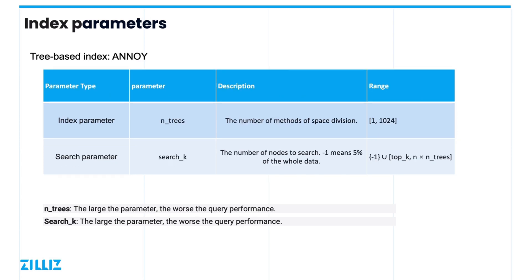When querying with Annoy, the algorithm follows the tree structure to find subspaces close to the target vector and then compares all the vectors in these subspaces, requiring at least search_k compared vectors to get the final result. When the target vector is close to the edge of some subspace, it is sometimes necessary to greatly increase the number of subspaces searched to obtain a high recall. Therefore, Annoy uses n_trees of different partition methods to search all partition methods simultaneously, reducing the probability that the target vector is always at the edge of a subspace. The smaller search_k and n_trees are, the better the performance, but also the relatively lower the recall of the query.